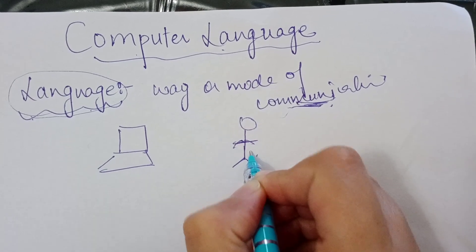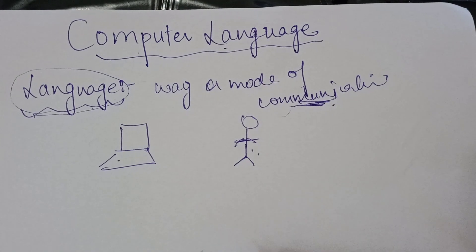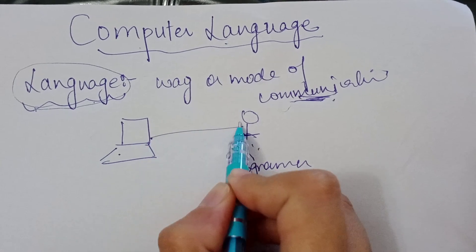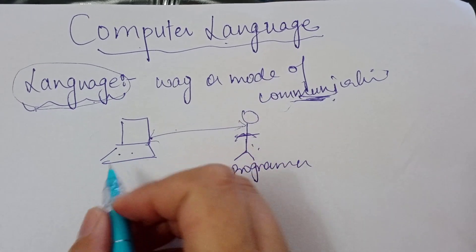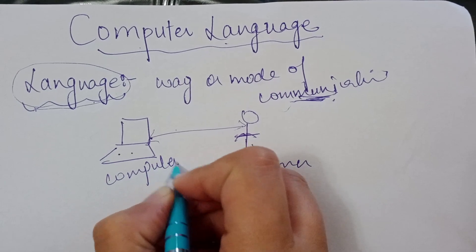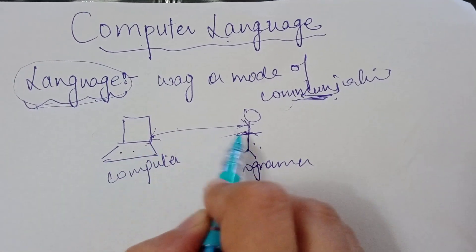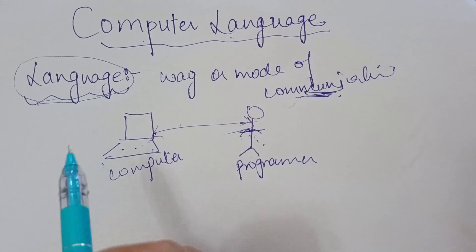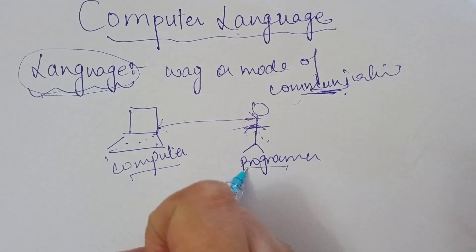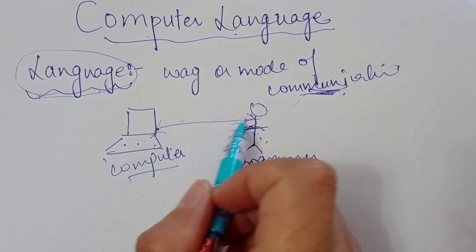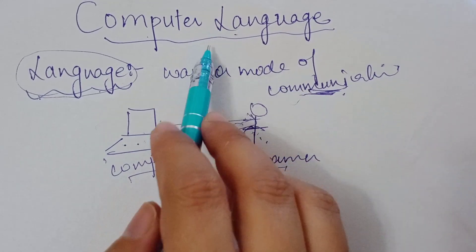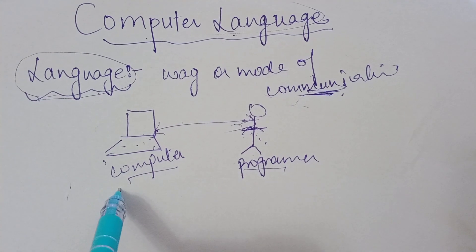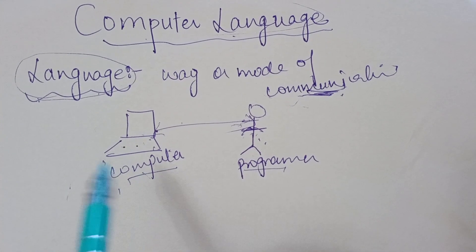So we have a programmer and a computer. The programmer knows natural languages like English or any language, and the computer is a separate entity. The motive is to communicate with each other — whatever the programmer wants, the computer should understand, and the outcome the programmer must be able to understand. So we need a medium, a way of communication, and we develop a language and we call it computer language.